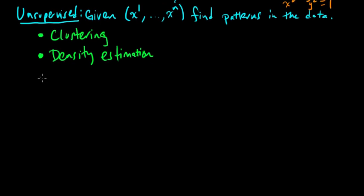Another one is what's called density estimation. And I'll mention a third one. There's probably many more, but a third type of unsupervised learning is what's called dimensionality reduction.